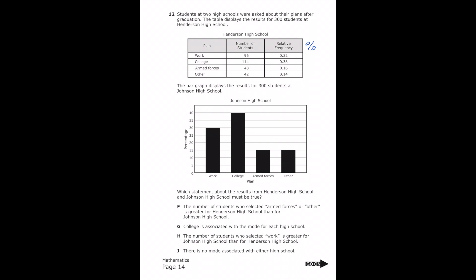Letter F says the number of students who selected armed forces or other is greater for Henderson than for Johnson. For Henderson, armed forces was 0.16 (16%) and other was 0.14 (14%), totaling 30%. For Johnson, armed forces is 15% and other is 15%, also totaling 30%. They're actually equal, so Henderson is not greater — marking out letter F.